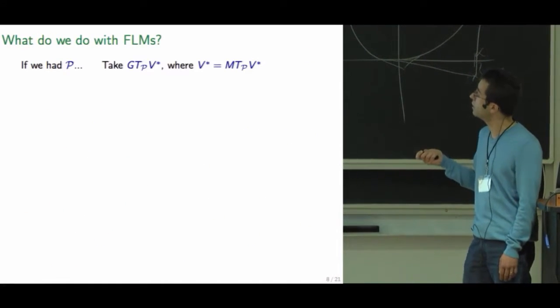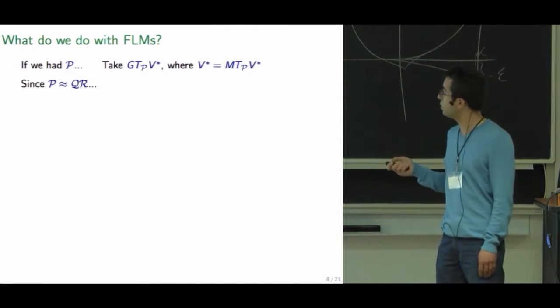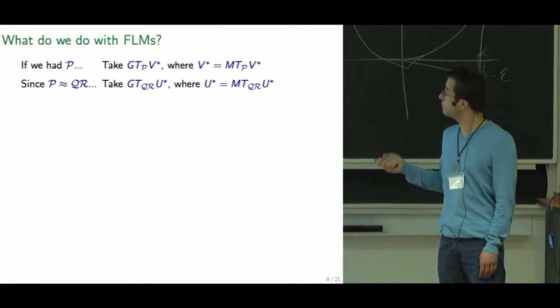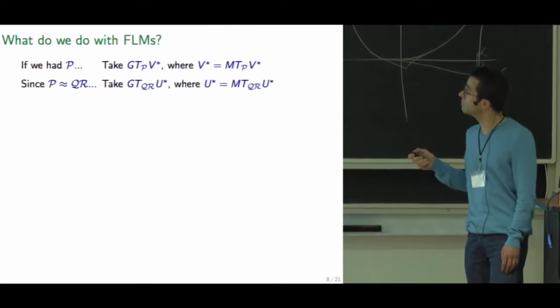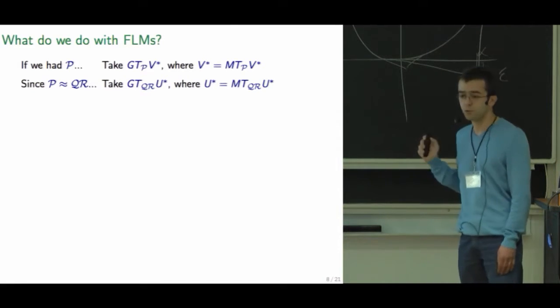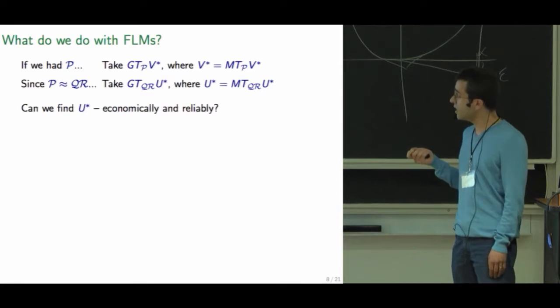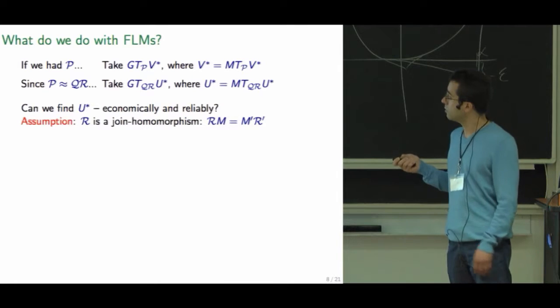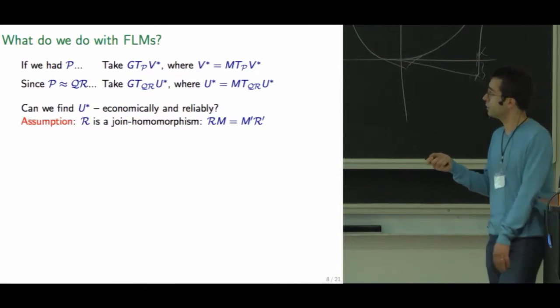So if we had P, we'd solve the Bellman optimality equation, take the greedy policy. We don't have P, so just replace with QR and try to do pretty much the same thing. We don't even know if this fixed point exists, but let's go with it for now. And the question is, can we find this fixed point, even if it exists, we want to do it reliably.